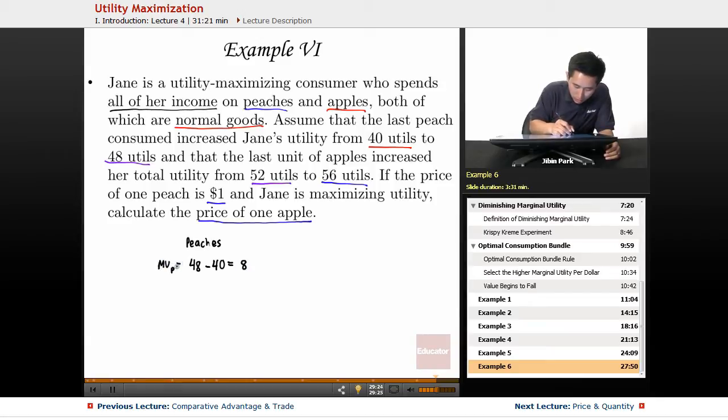Now take a look at apples. The marginal utility of apples equals 56 minus 52, which equals 4.